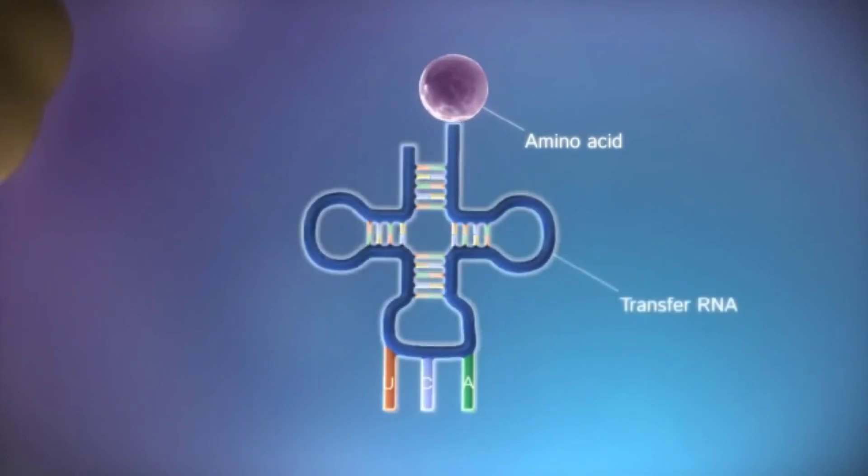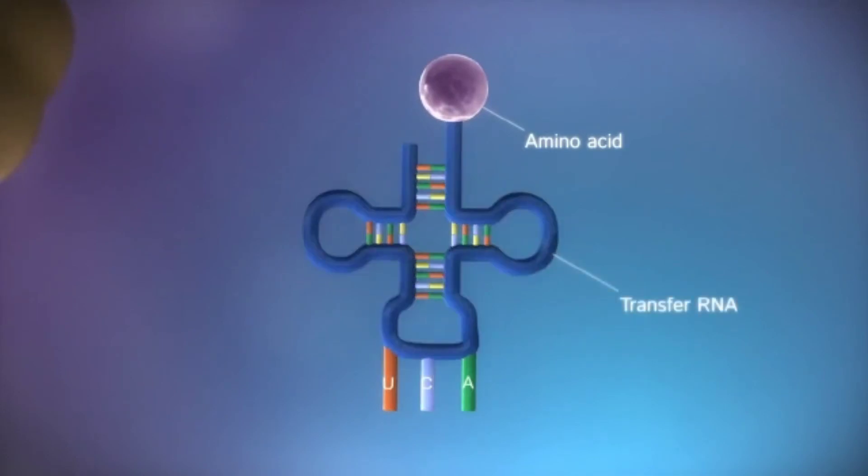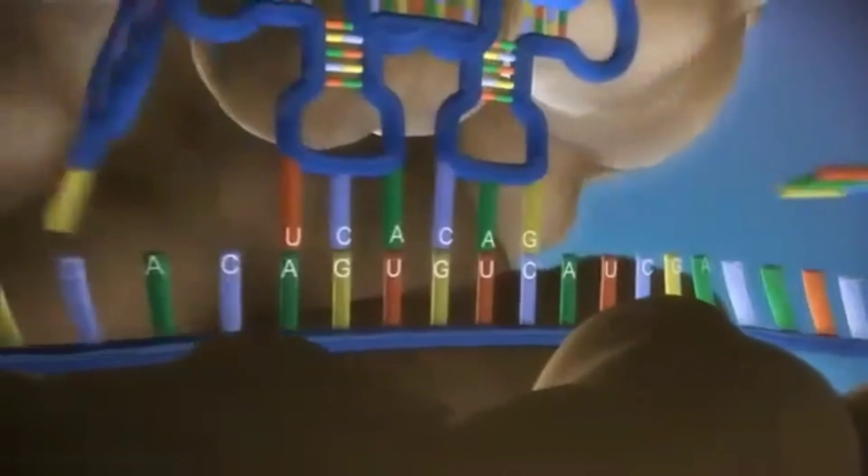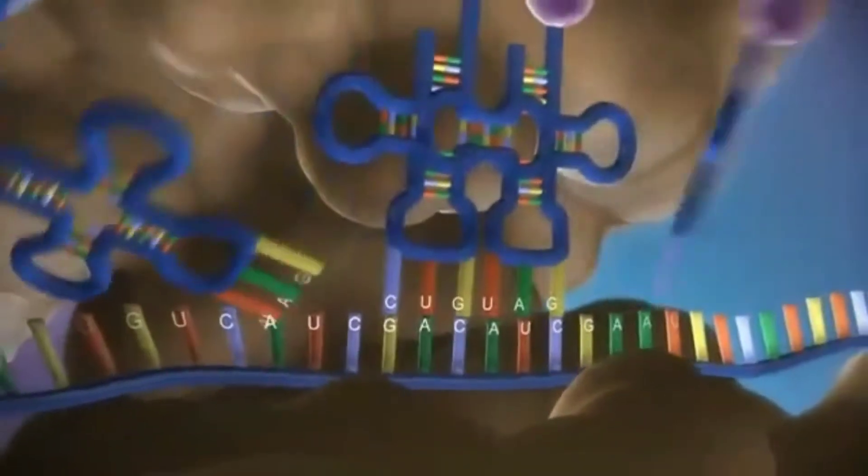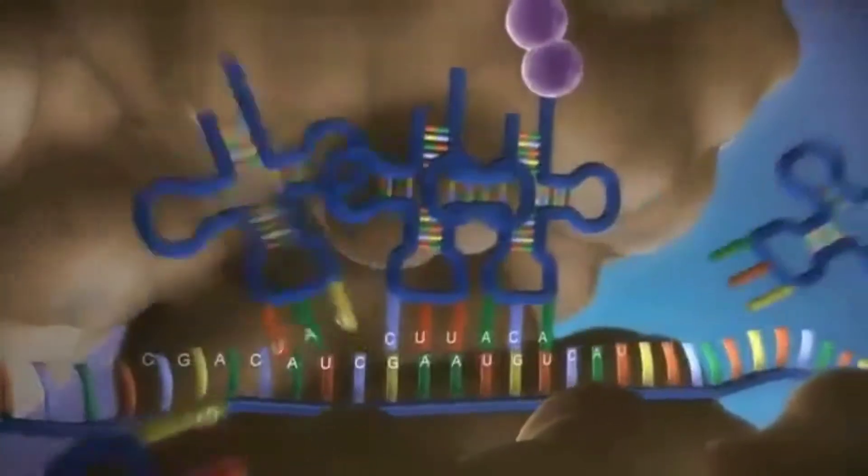Transfer RNA molecules carry the amino acids to the ribosome. The messenger RNA is read three bases at a time. As each triplet is read, a transfer RNA delivers the corresponding amino acid.